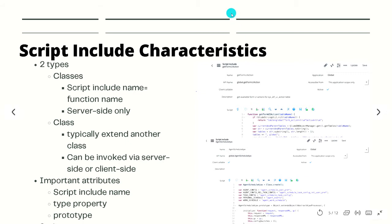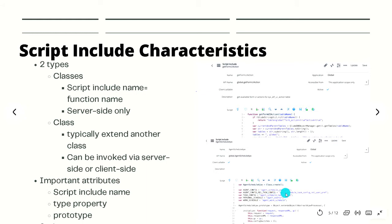On the other hand, a class-based Script Include can be invoked from the client side or server side, and it typically extends another class — such as Ajax — as shown in this image. In a classless Script Include the name must match the single function in the script, while in a class-based Script Include you can define multiple functions. When creating a class Script Include, the type property and prototype property are automatically generated when you provide the Script Include name.